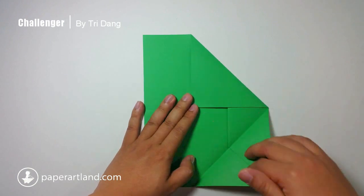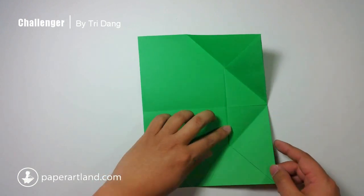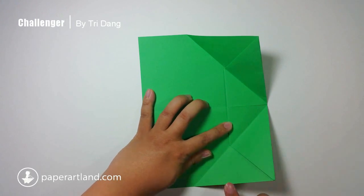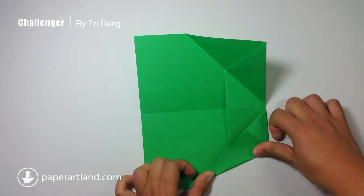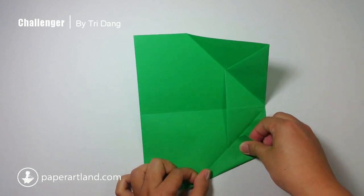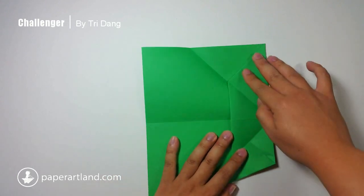On the following step, unfold this layer, and also this layer. Then fold it straight like this. Now, let's start from this edge, I fold it to this crease. Also, fold this side.